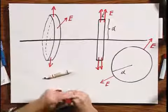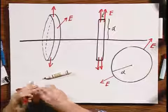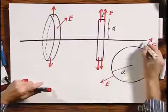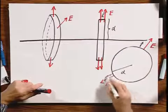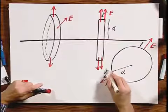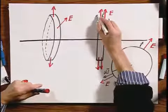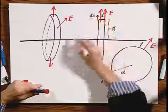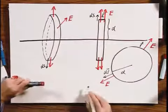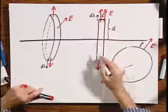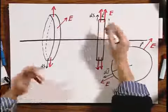How about the values of DS? Well, DS, per definition, is pointing outwards. So, DS here is also pointing outwards. DS here is pointing outwards. So, everywhere where we have here these E vectors, the DS and the E's are in the same direction. So, the dot product can be ignored because the cosine between the angle between E and DS is 1.